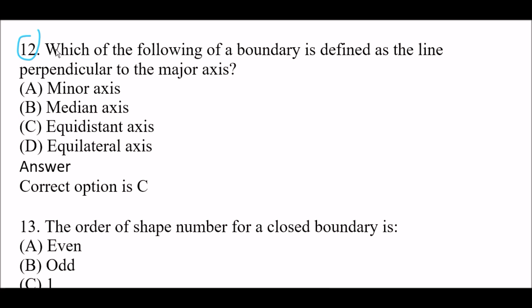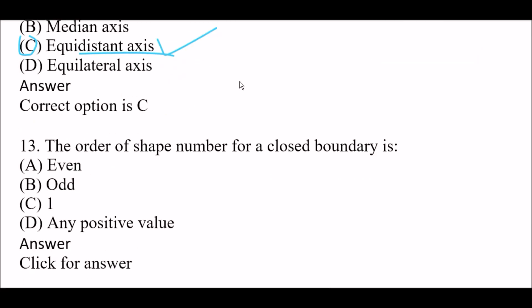Next question: Which of the following is a boundary defined as a line perpendicular to the major axis? Option A: minor axis, Option B: median axis, Option C: equidistant axis, Option D: equilateral axis. The right answer is Option C, equidistant axis. The equidistant axis of a boundary is defined as the line perpendicular to the major axis.